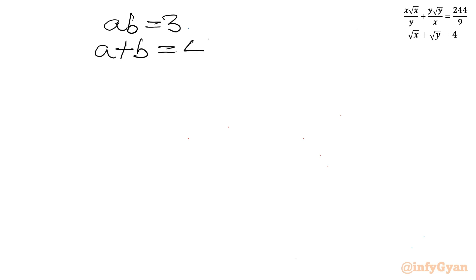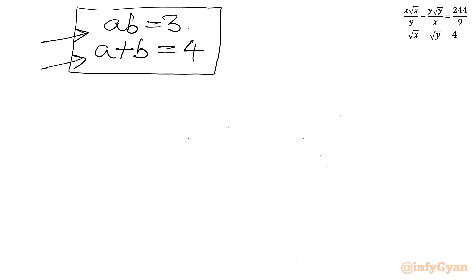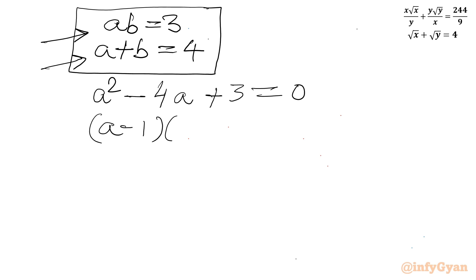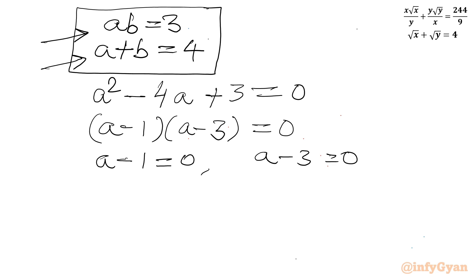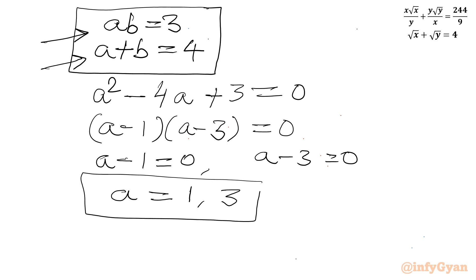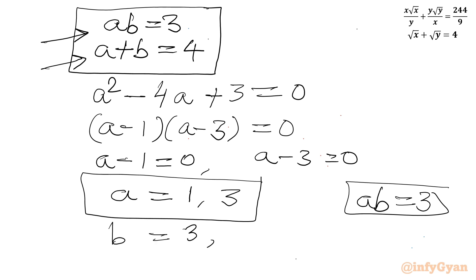Now we have the system: a + b = 4 and ab = 3. Treating a and b as roots of a quadratic: a² − 4a + 3 = 0. Factoring: (a − 1)(a − 3) = 0, giving a = 1 or a = 3. Correspondingly, when a = 1, b = 3, and when a = 3, b = 1.